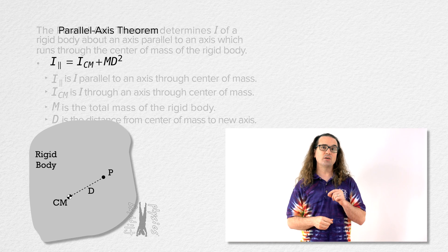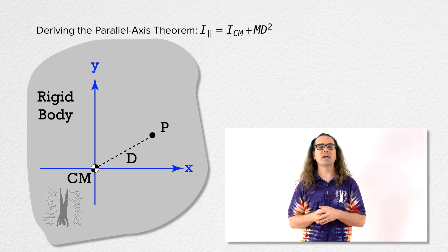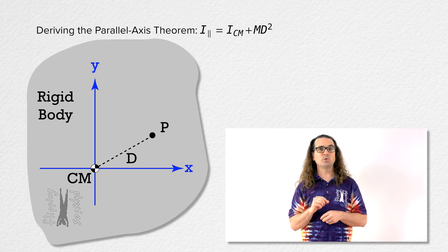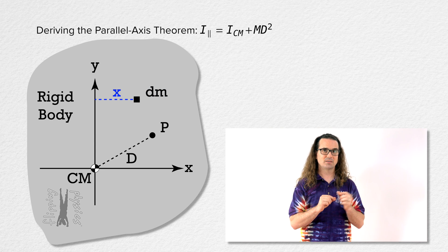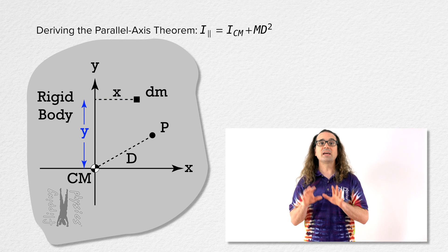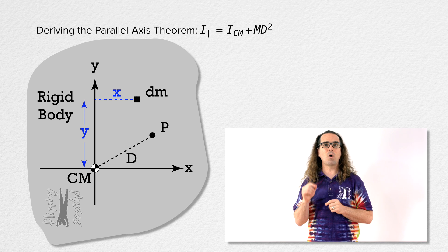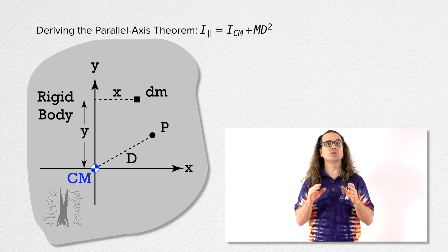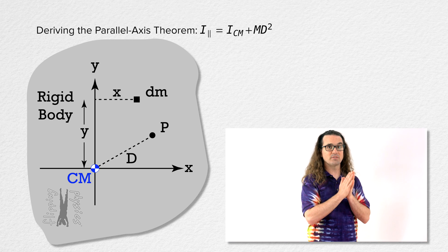Now let's place the origin of our coordinate system at the center of mass of the object. Identify an infinitesimally small piece of the object, dm, which is located a variable distance in the x direction, x, and a variable distance in the y direction, y. Both of those distances are from the origin, which is also the center of mass, to the location of dm.